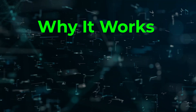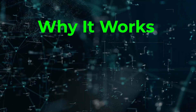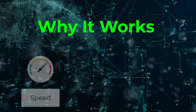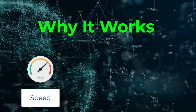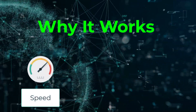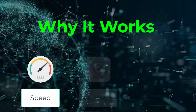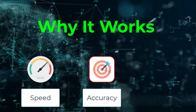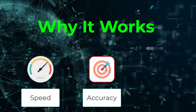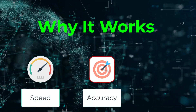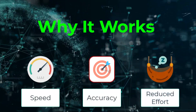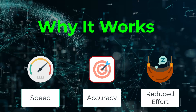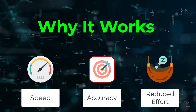Here's why the flipped interaction pattern works so well. Speed — AI focuses the conversation to achieve the goal faster. Accuracy — it asks the right questions to avoid unnecessary back and forth. And third, ease — you don't need to know what to ask. The AI takes care of that for you.